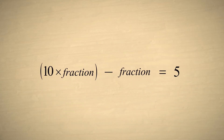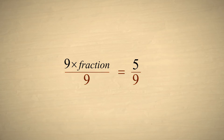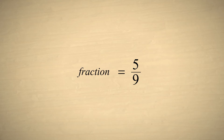Let's write this statement as an equation: ten times the fraction minus the fraction equals five. Subtracting one thing from ten things leaves nine things, so instead of writing ten times the fraction minus the fraction, we can simply write nine times the fraction. Since both sides of the equation are equal, we can divide each side by nine. The nines on the left cancel, leaving us with an equation which says that the fraction is equal to five-ninths. We have converted our repeating decimal number to the fraction five-ninths.